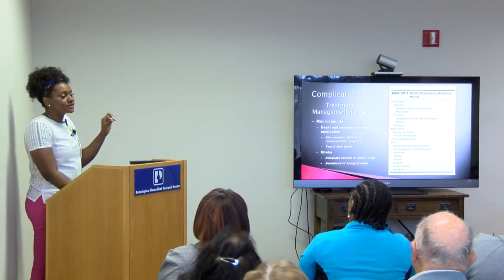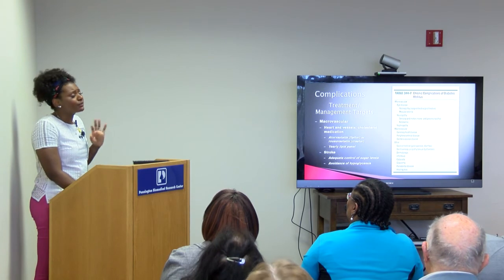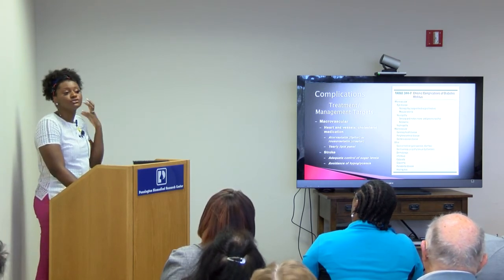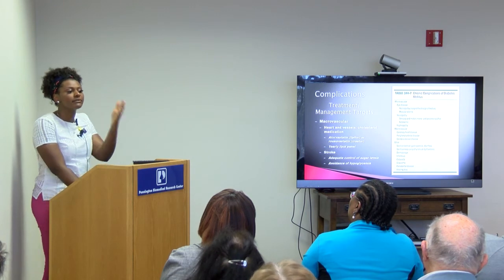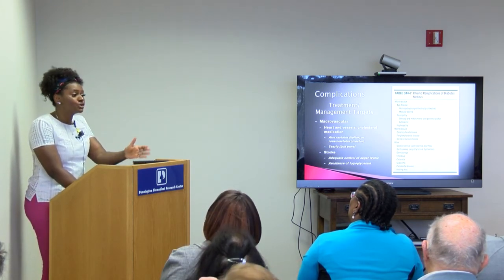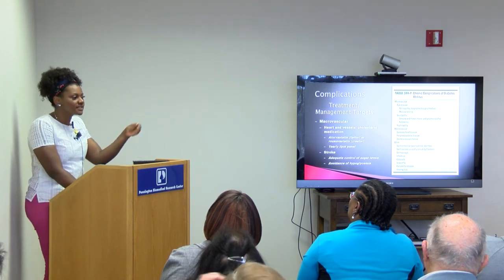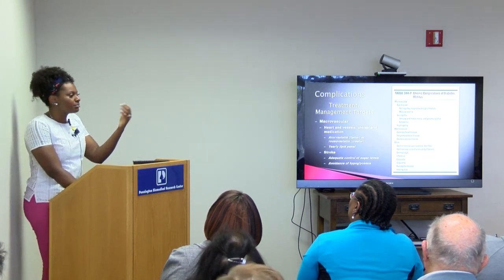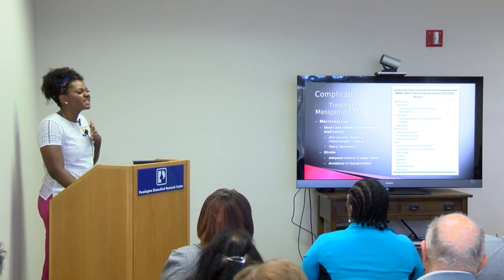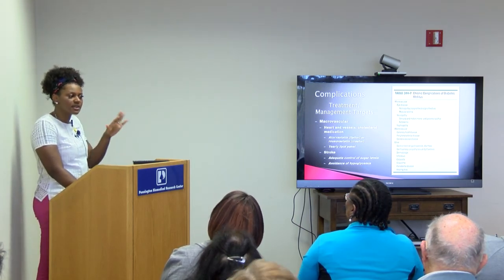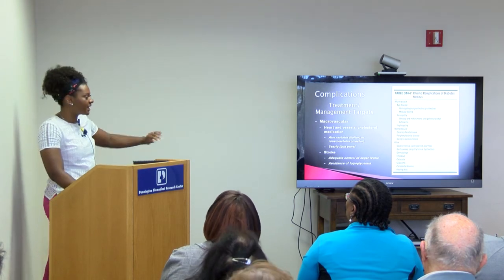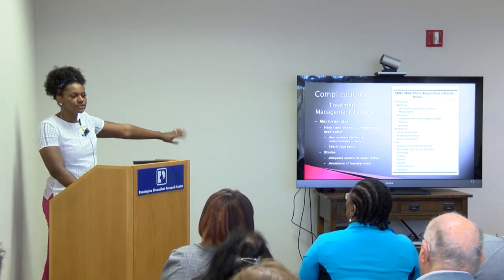For macrovascular complications — heart disease and stroke — how do we prevent that? We put everyone on a cholesterol pill. If you're above the age of 40 with diabetes, you should be on a statin: atorvastatin, rosuvastatin, pravastatin, or simvastatin. Specifically Lipitor or Crestor are the best when it comes to diabetes. As long as you're taking that before bed every night, you're protecting yourself from heart disease and stroke in the future.